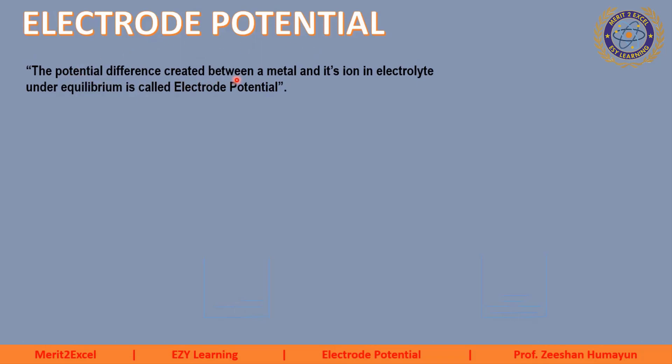First of all, what do you mean by electrode potential? The word 'potential' means hidden or stored, but in this case electrode potential ka matlab hai ki the potential difference — yani yahaan par koi potential difference involve hai. The definition of electrode potential is written as: the potential difference created between a metal and its ion in electrolyte under equilibrium is called electrode potential. Yani kisi bhi metal aur us ke ion ke darmiyaan potential difference ko electrode potential kaha jata hai.